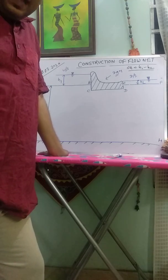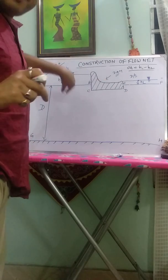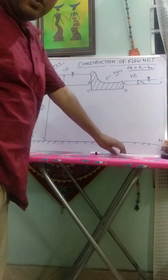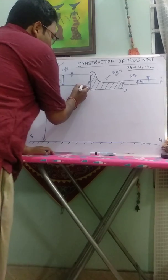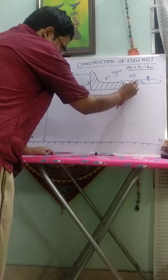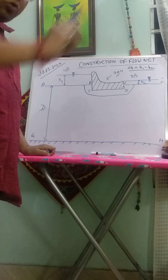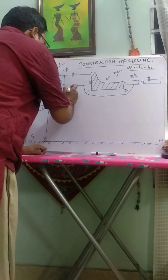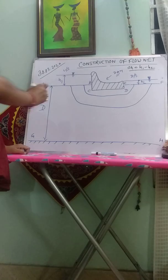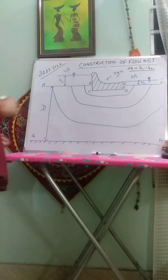First, there is a flow line. Flow line means the line through which seepage and flow of water occurs through the soil. That's why we construct flow net. Now I construct the flow net. This is number one flow line. Flow occurs through this line. Next.